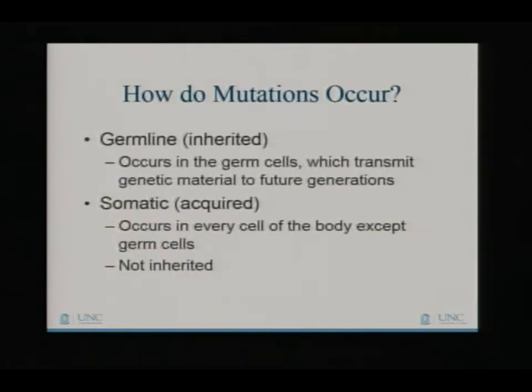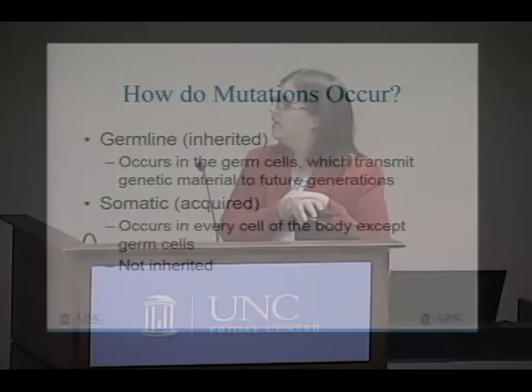How do mutations occur? There's a germline mutation — germline versus somatic. Germline means inherited; it occurs in the germ cells, which transmit genetic material to future generations — so thanks, mom and dad. Somatic mutations are acquired; they occur in every other cell in the body except for the germ cells. In other words, these are mutations that are not inherited.